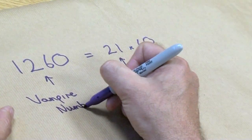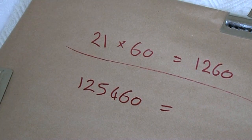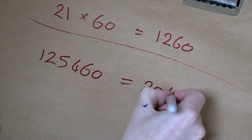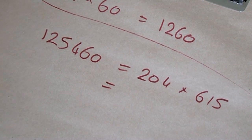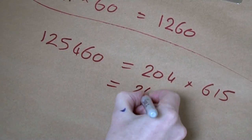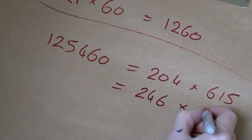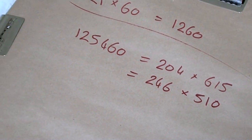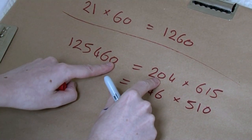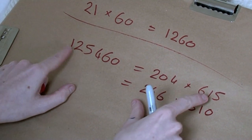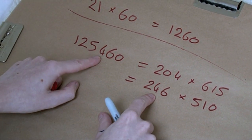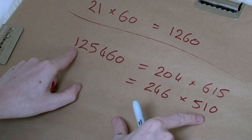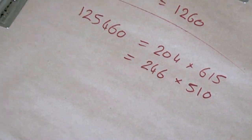One hundred and twenty-five thousand four hundred and sixty is a vampire number. Its fangs are two hundred and four times six hundred and fifteen. But I like this one because there are two ways to do it — we could also have two hundred and forty-six times five hundred and ten. The same six digits — 2, 0, 4, 6, 1, 5 — used in a different order.